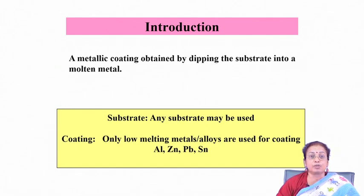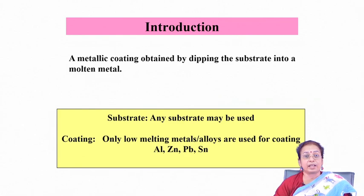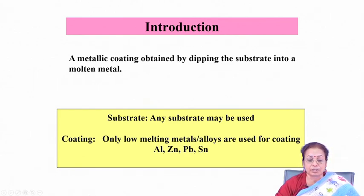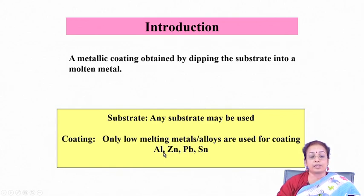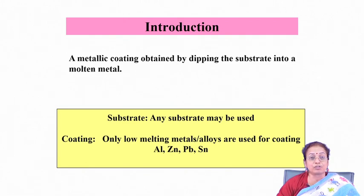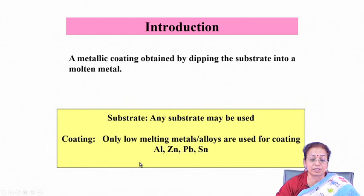The coating may be aluminum, zinc, lead, tin, or their alloys, which have very low melting temperatures. This hot dipping technique is specifically applied for the development of coatings either for reducing the coefficient of friction or for corrosion resistance applications. It is not really applied for hard coatings which are for wear resistance applications.